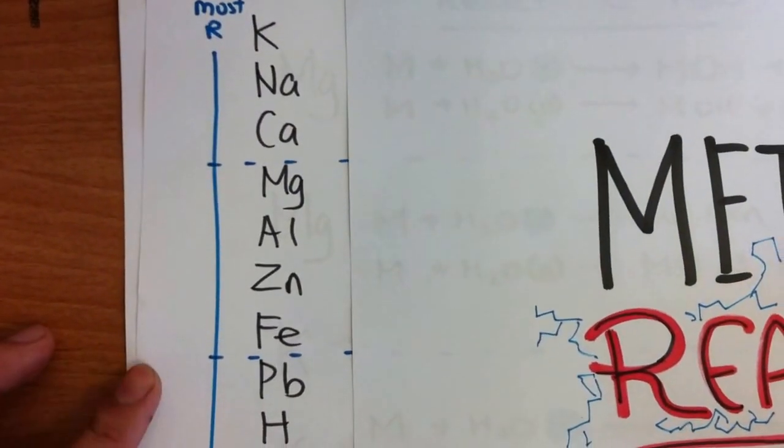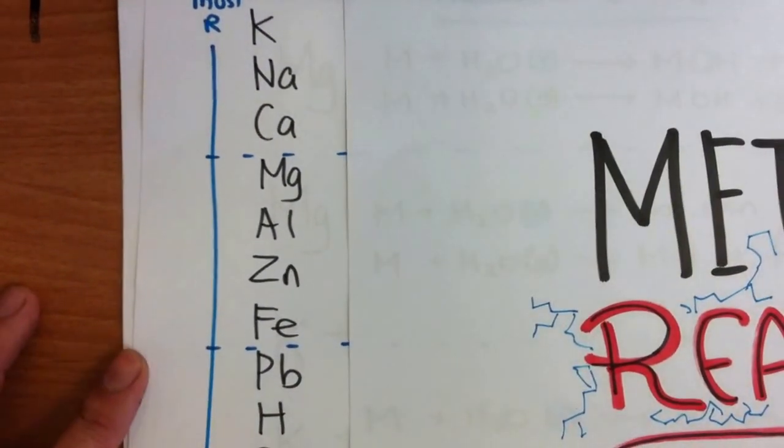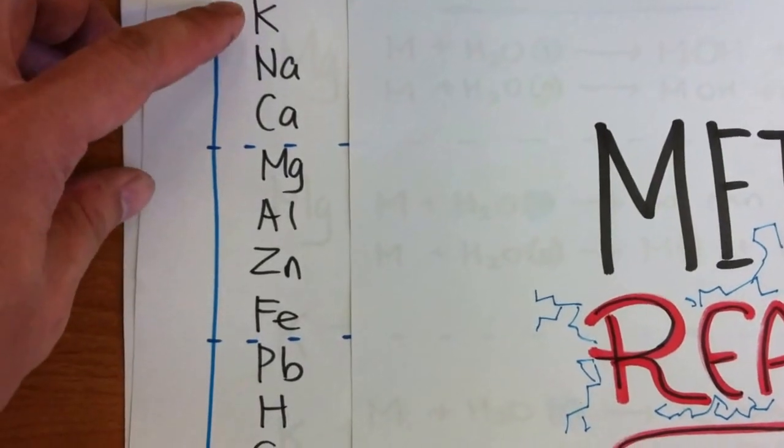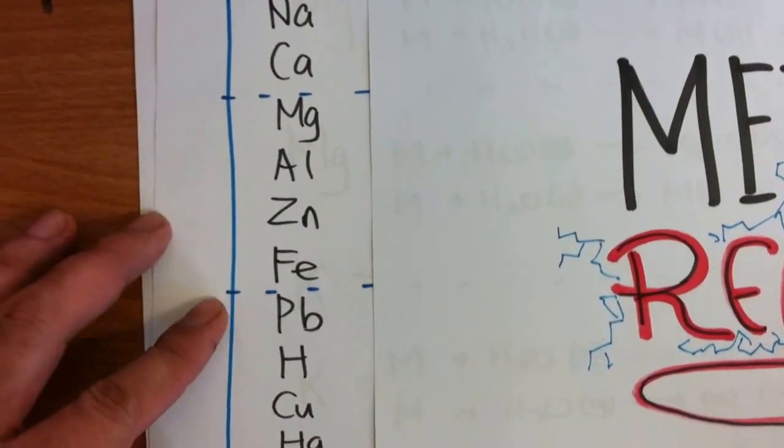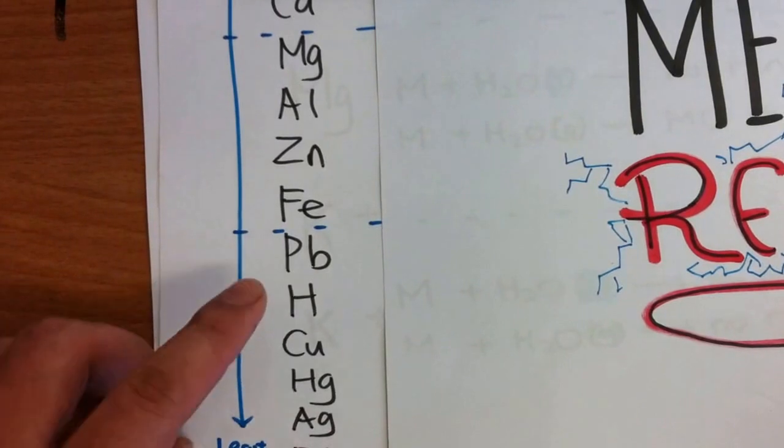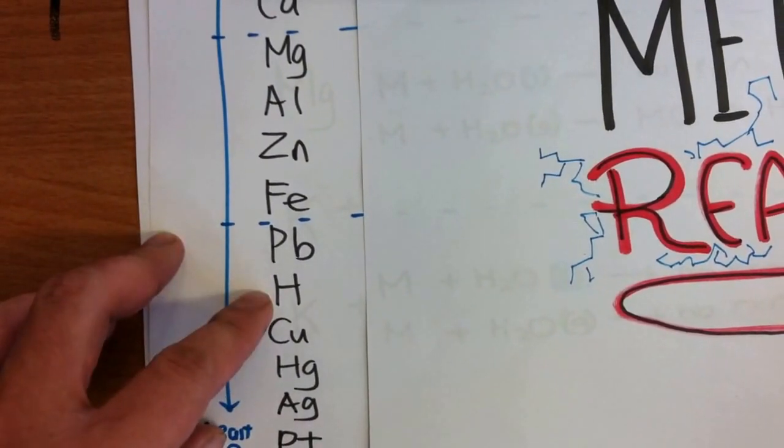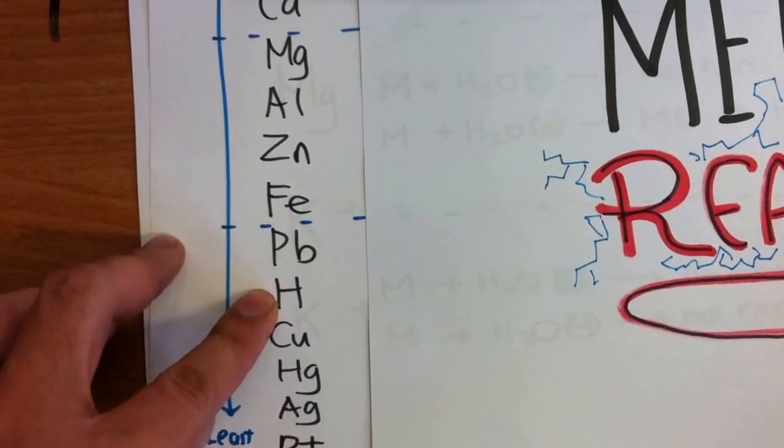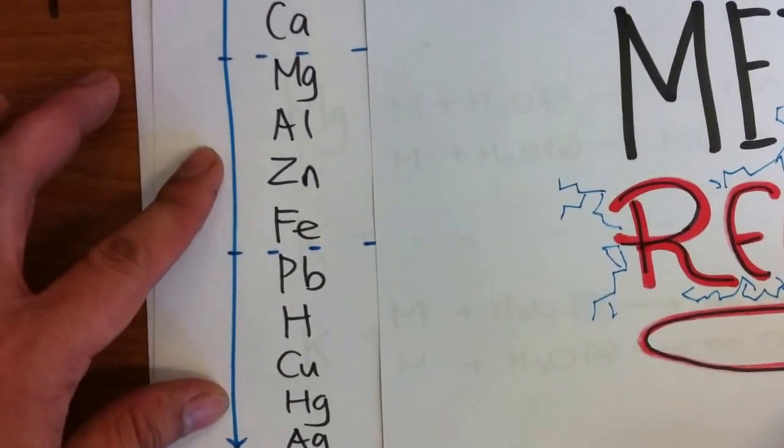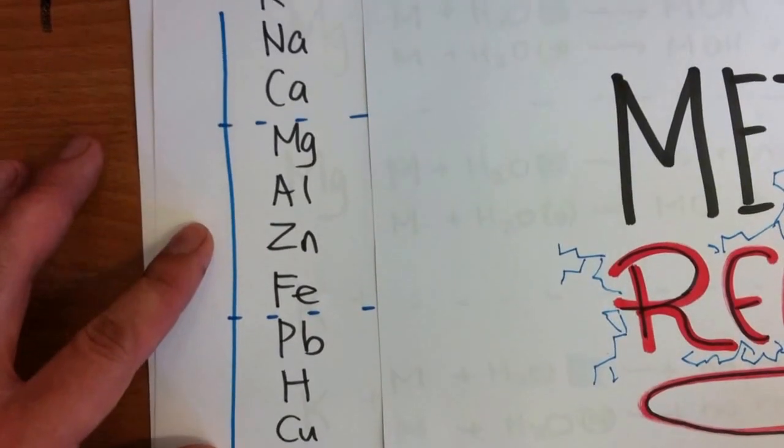Now this is something that you have to memorize. Scientists came out with a list of metals. I have left hydrogen there as a marker because it's a useful marker. Hydrogen, by the way, is a non-metal but I have left it in the list so that it is easy to study.